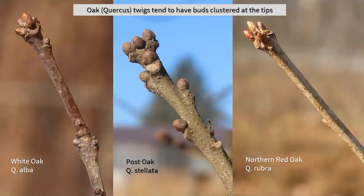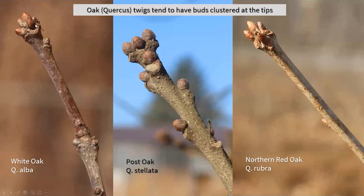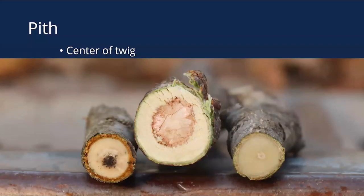There are some characteristics that will help you right away. One good example is oaks — the Quercus genus tends to have a lot of buds clustered towards the tip of the twigs. You can see there's a central terminal bud surrounded by a bunch of lateral buds. That's fairly consistent across all the different oak species, so if you see that consistently it's a good indication that it might be an oak.